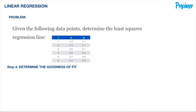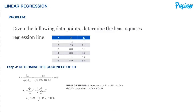We'll calculate the correlation coefficient R, given by the equation on screen. We've defined all the metrics except for the sum of squares of Y, S-Y-Y, which is given by the formula shown — and that can be found in your NCES reference handbook. Plugging in all of our values, we get a goodness of fit of 0.999.